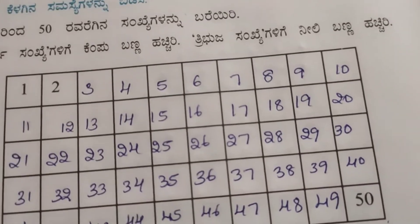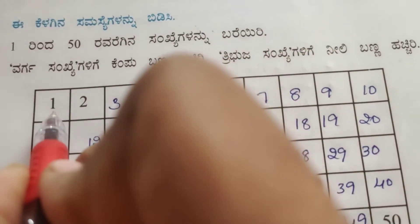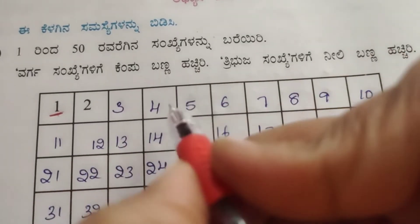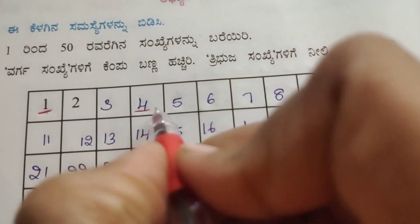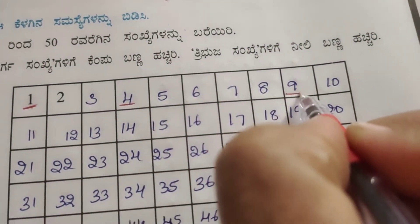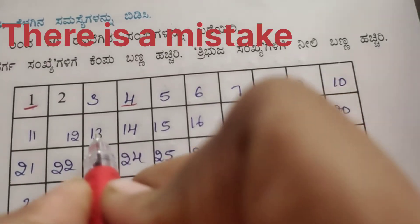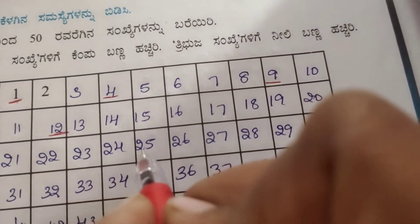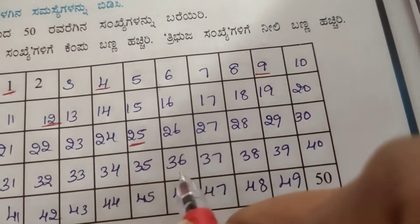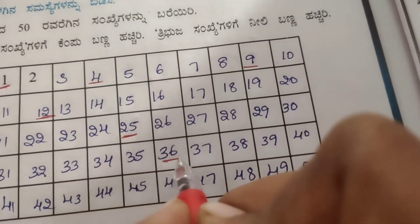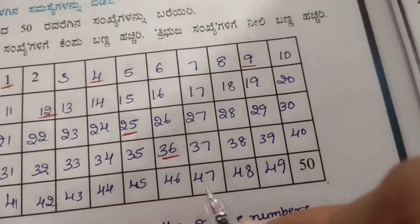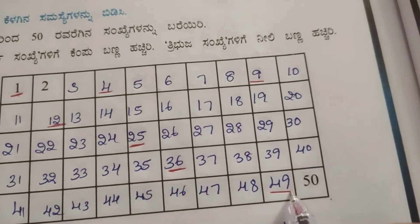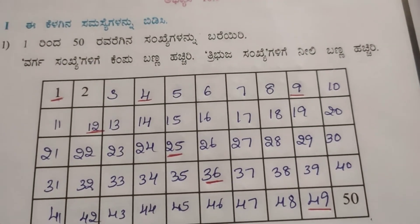List the square numbers. 1 times 1 is 1, 2 times 2 is 4, 3 times 3 is 9, 4 times 4 is 16, 5 times 5 is 25, 6 times 6 is 36, 7 times 7 is 49. These are the square numbers within 1 to 50.